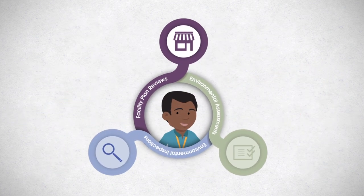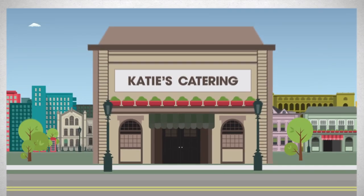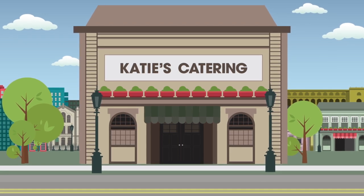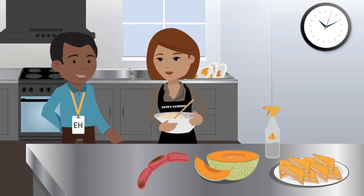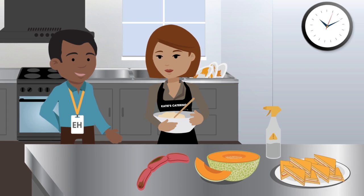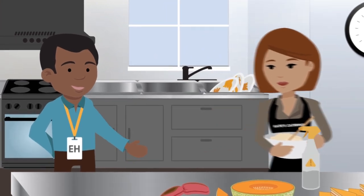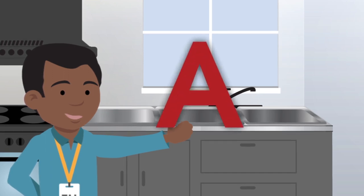Food establishment regulatory inspections focus on real-time health and safety conditions. Environmental health professionals assess processes, procedures, and food safety problems they observe at the time of inspection. They are typically risk-based, attempting to identify and provide greater emphasis on factors that cause foodborne illness. Inspections occur on a regular basis and are typically unannounced. Depending on your jurisdiction, food establishment inspections may result in either a letter grade, a number grade, pass-fail score, or other scoring methodology.